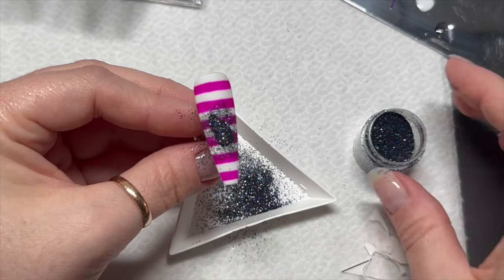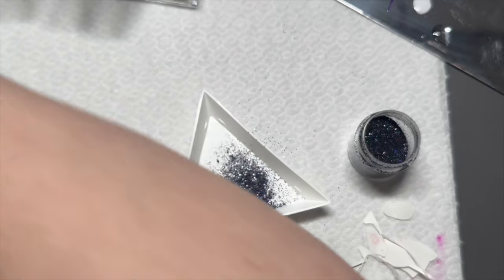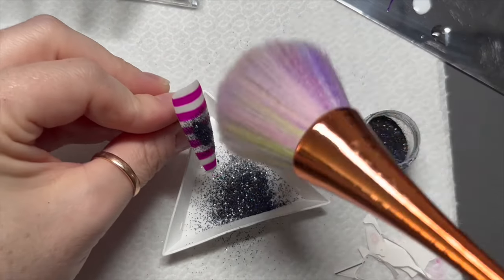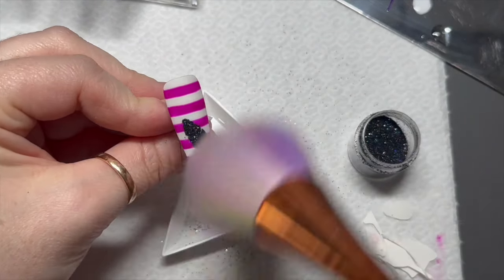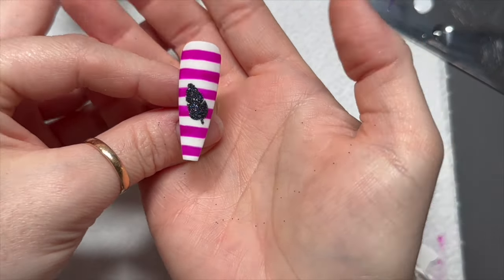Before you cure the top coat, you want to sprinkle it with the Deep Space glitter, pop it in the lamp to cure, and then when you brush it off, you can still see the gaps in the feather. It just makes it look like a feather as opposed to an arrowhead or something.